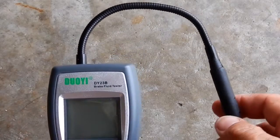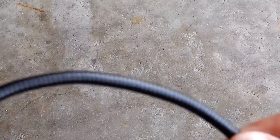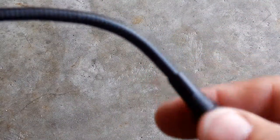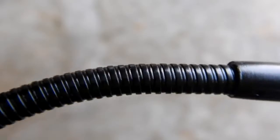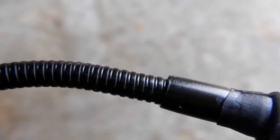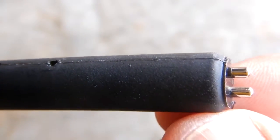It does have this flexible gooseneck on it, as you can see here. It is metal, and then there's your probe. Here's a better look at that gooseneck and then the probe.